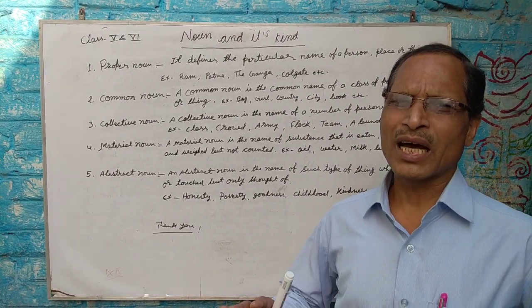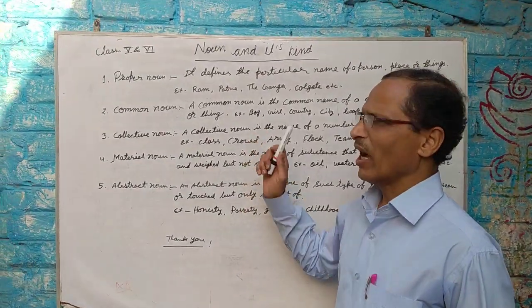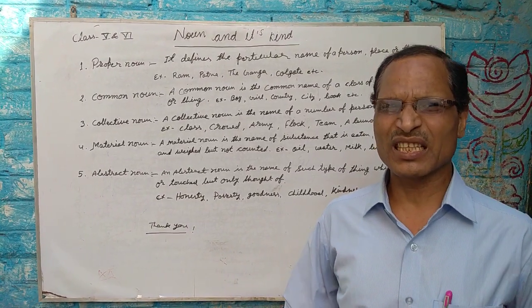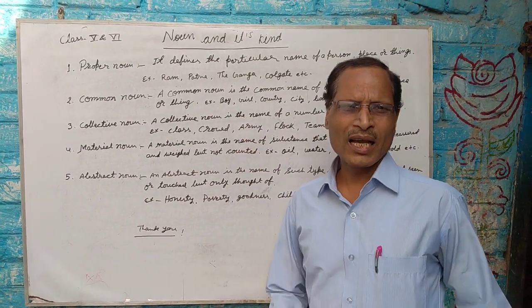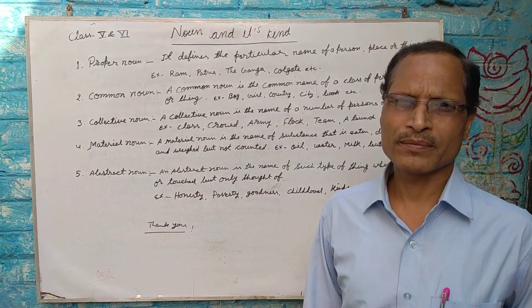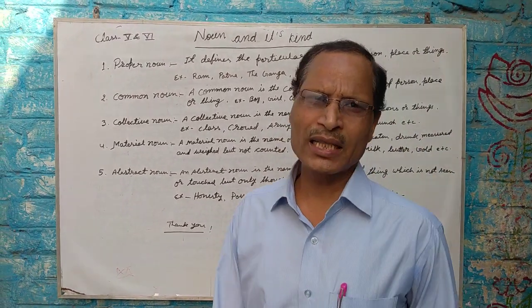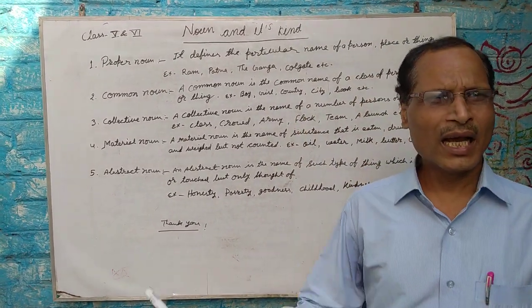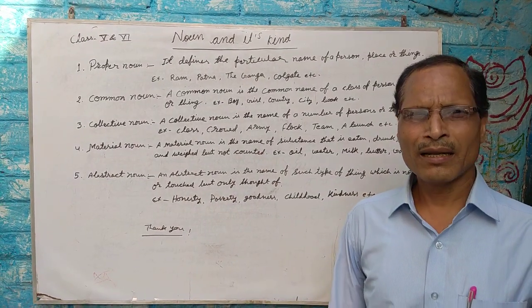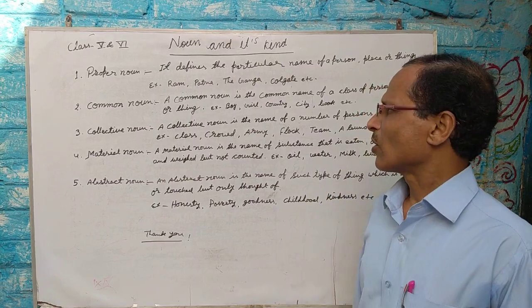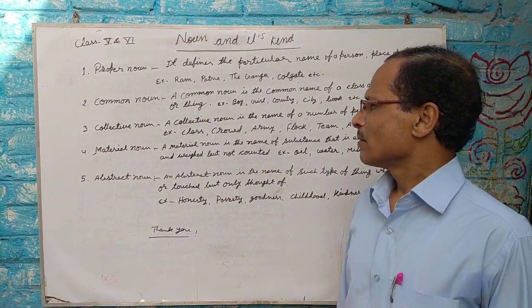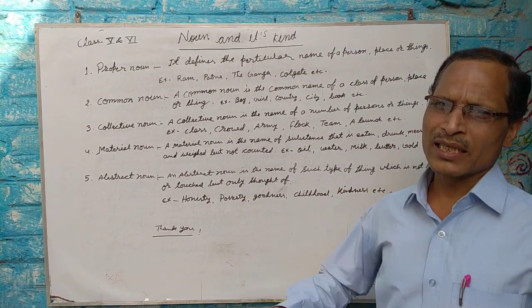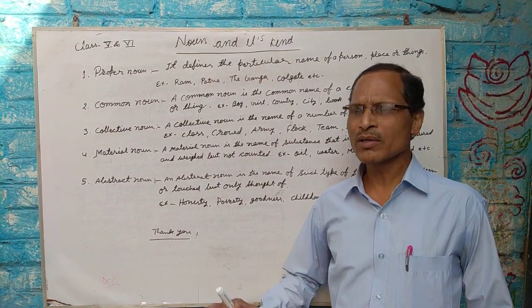संपूर्ण जाती का पता चलता है। जैसे 'boy' कहने से हमें सारे लड़कों का पता चलता है, किसी एक का नहीं। 'Girl' कहने से सारी लड़कियों का, 'country' कहने से सारे देशों का, और 'city' कहने से दुनिया के सभी नगरों का बोध होता है। इसलिए common noun वह शब्द है जिससे पूरी जाति का बोध होता है।